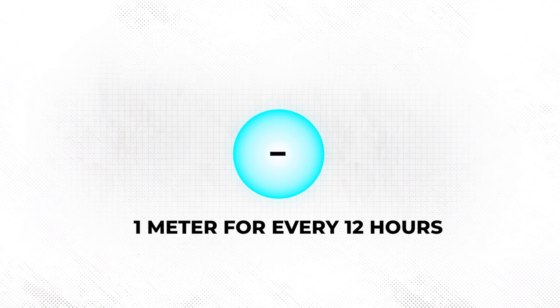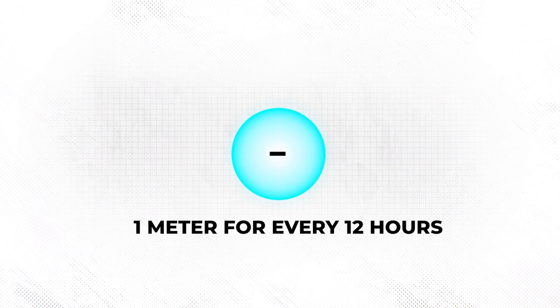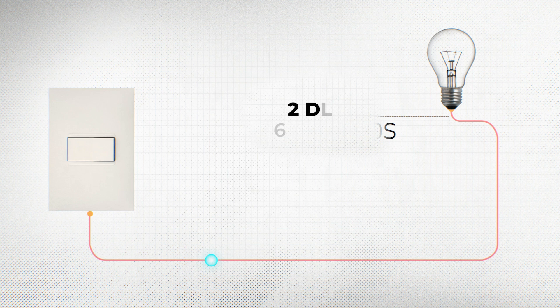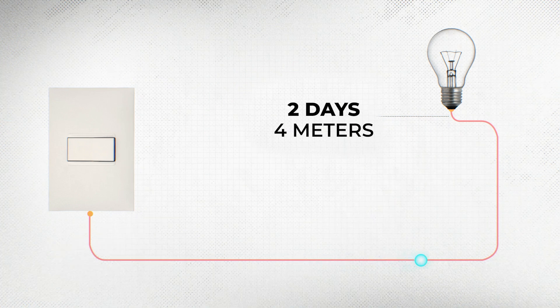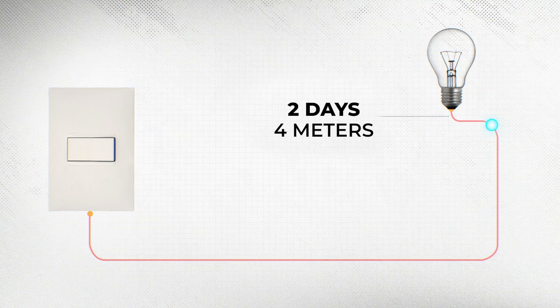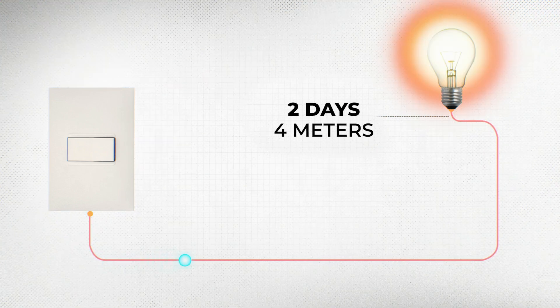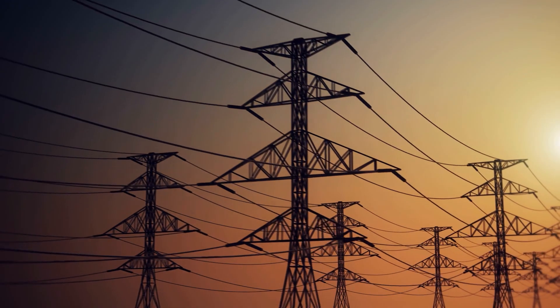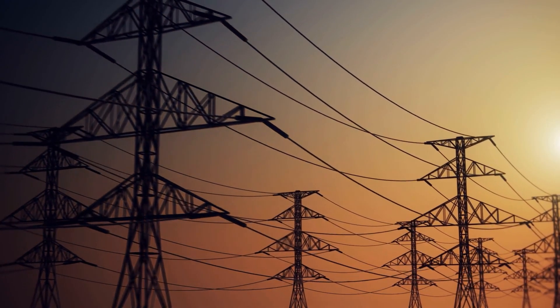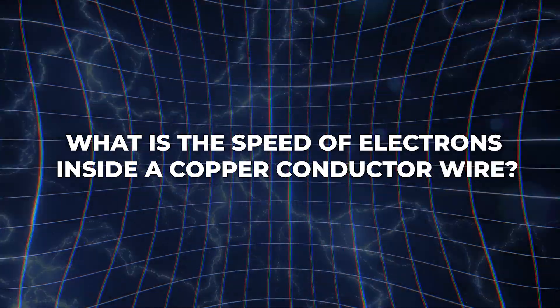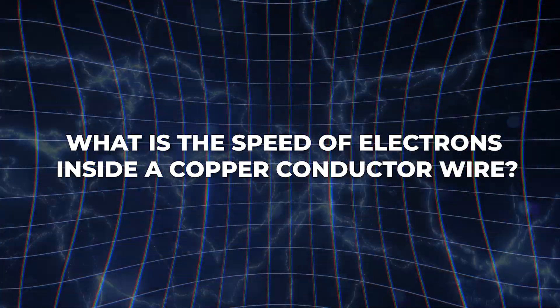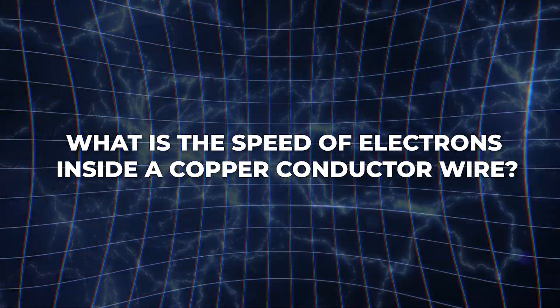In a typical conductor, the drift velocity of the electron is typically about 1 meter for approximately every 12 hours. To put this in perspective, it will take approximately 2 days for an electron to travel from a switch to a lamp just about 4 meters away. And with that, we answer the first question, which was what is the speed of electrons inside a copper conductor wire? But don't go away yet, because we have just begun.